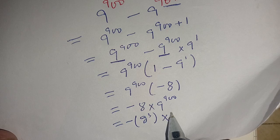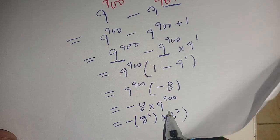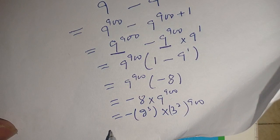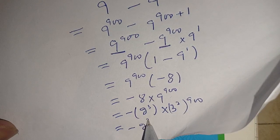So (3^2)^900. For more simplification we can simplify it as -2^3 times 3^(2×900), which is 3^1800.